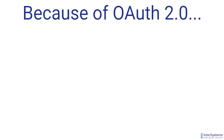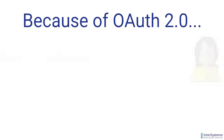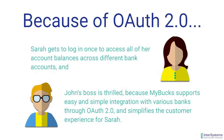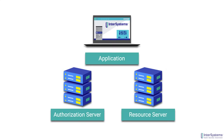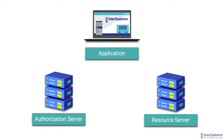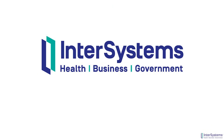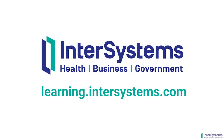Once everything is implemented, we have happy and informed parties all around. Sarah gets to log in once to access all of her account balances across different bank accounts, and John's boss is thrilled because MyBucks supports easy and simple integration with various banks through OAuth 2, simplifying the customer experience for Sarah. All of the OAuth 2 capabilities described in this video are available with InterSystems Cache, which can serve in any or all of the roles shown in this overview. Visit learning.intersystems.com to learn more about InterSystems products and technologies.